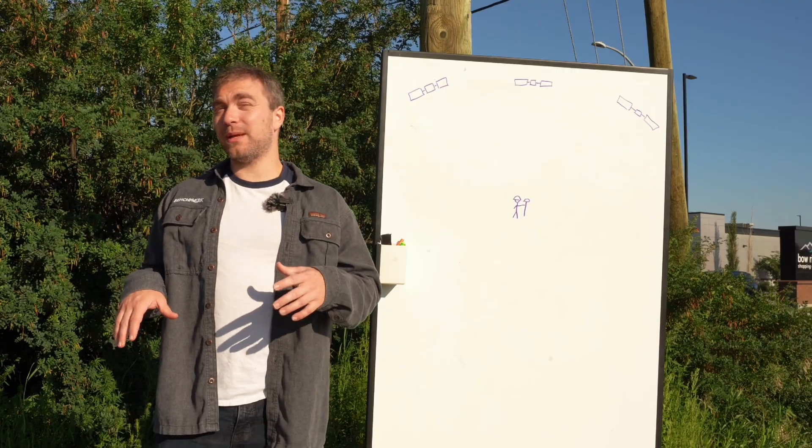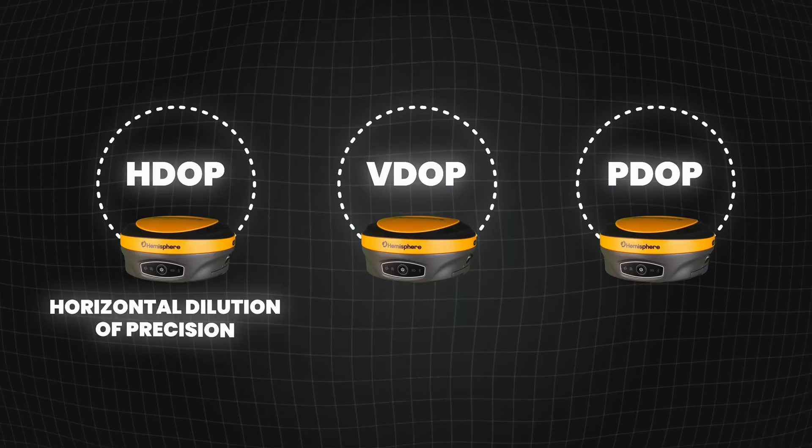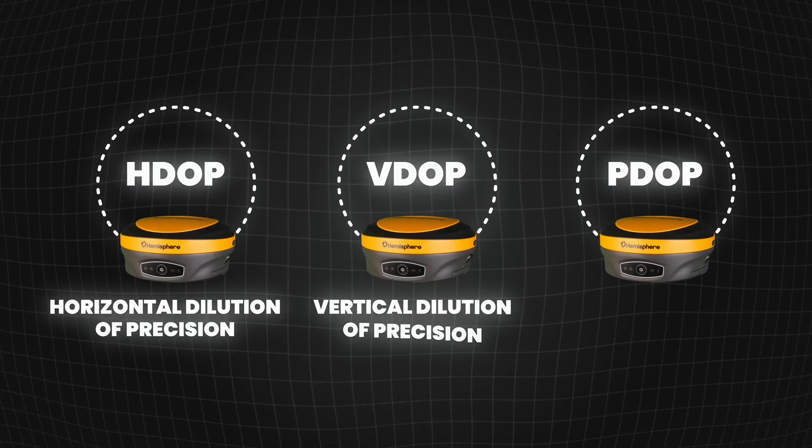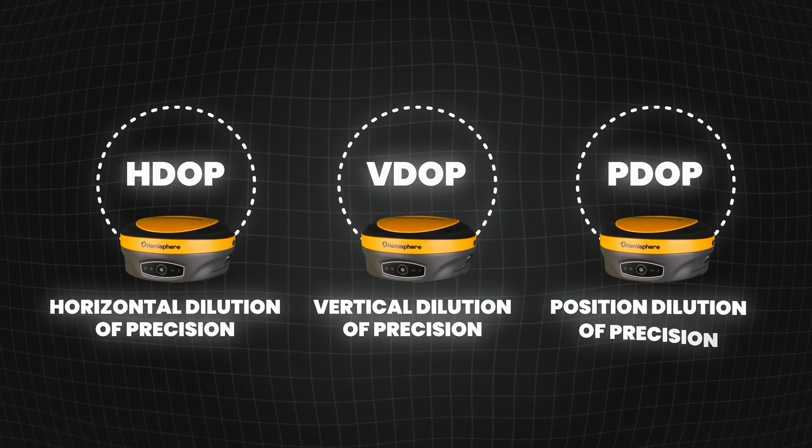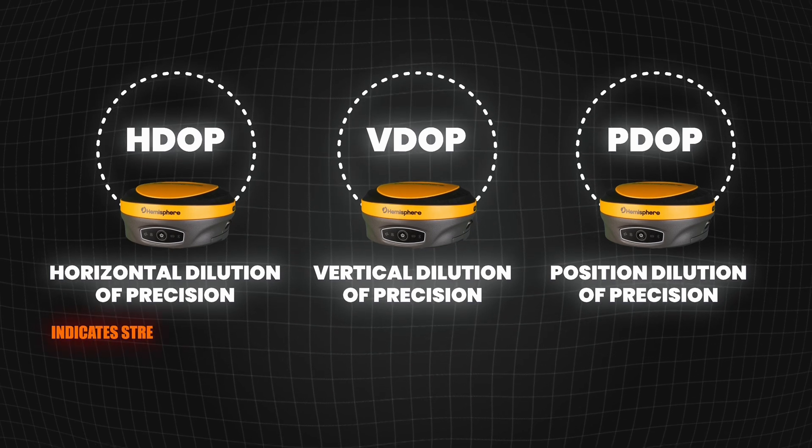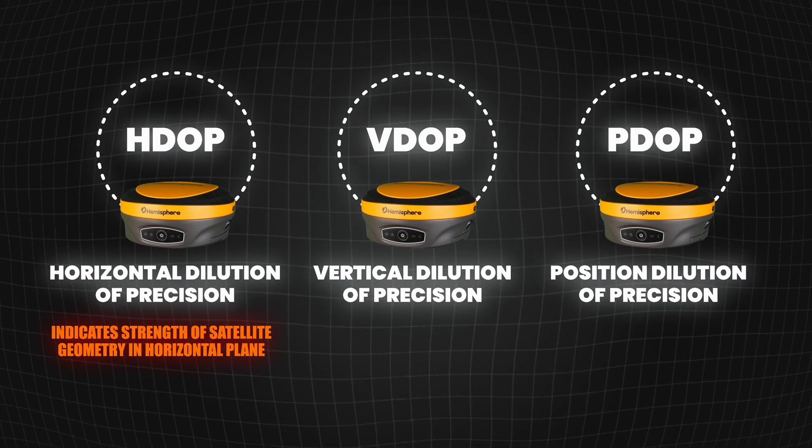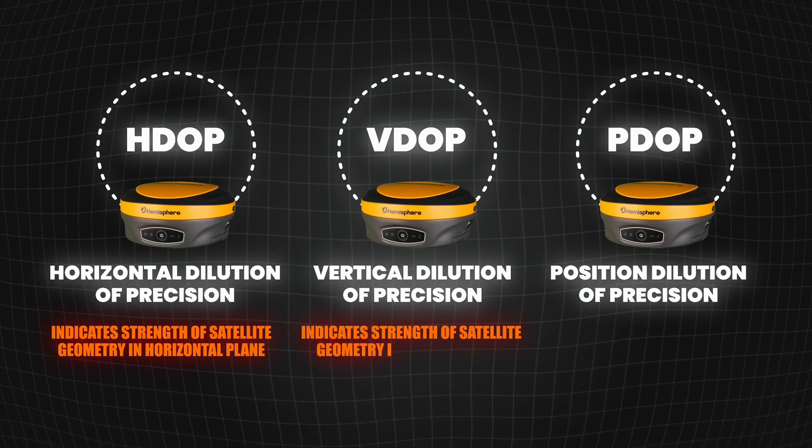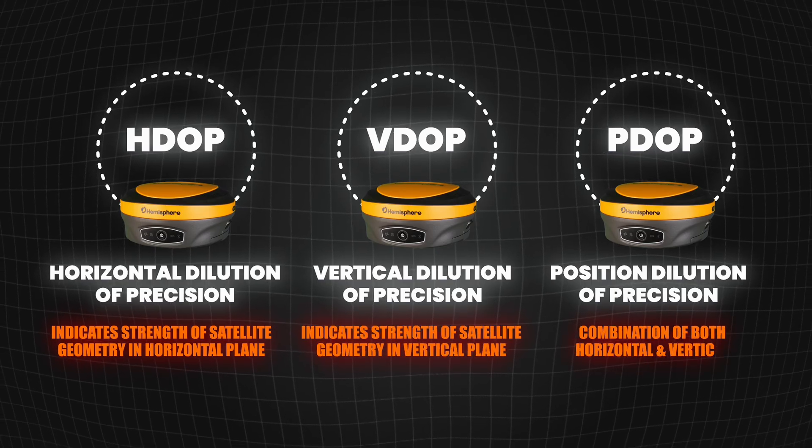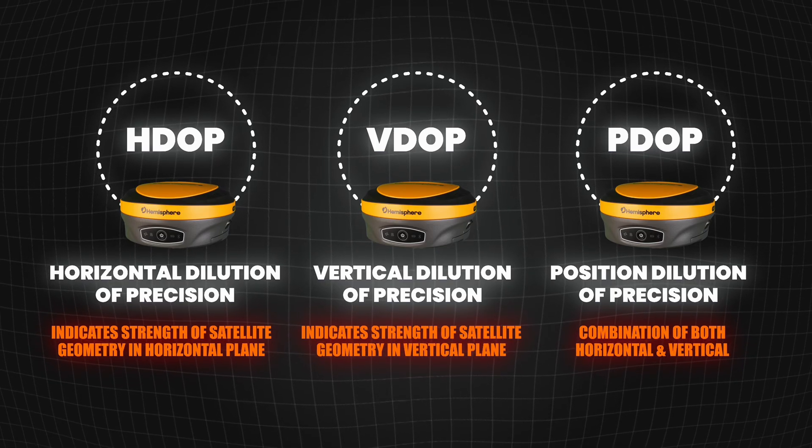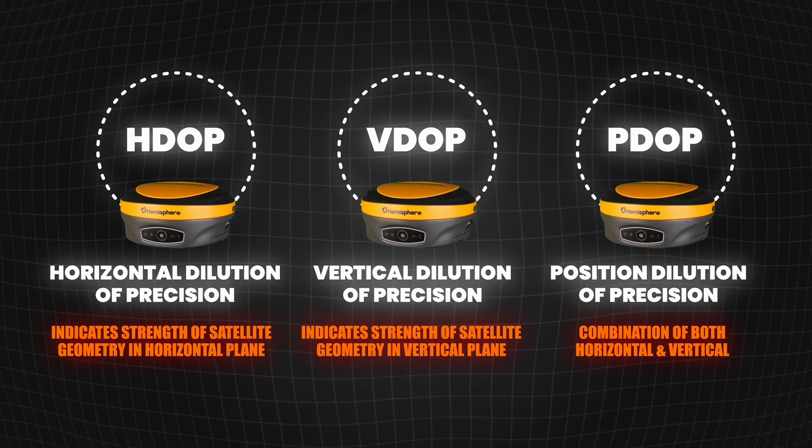So H-DOP, V-DOP, and P-DOP stand for horizontal dilution of precision, vertical dilution of precision, and position dilution of precision. Horizontal tells you it's a number that indicates the strength of your satellite geometry in the horizontal plane, vertical from the vertical plane, and then positional is a combination of the two that tells you sort of just a general strength of satellite geometry.